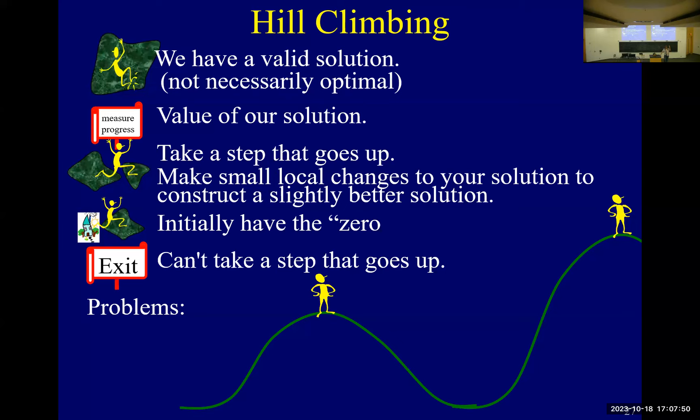Gradient descent, instead of going up or going down. And which direction do you go? You go in the direction that improves your solution the best. You have a solution, you look around locally to say, which direction, how do I change my solution to keep it valid while increasing my value the most? And you head in that direction. So that's called gradient, in the direction of gradient is like slope, in the direction of slope.